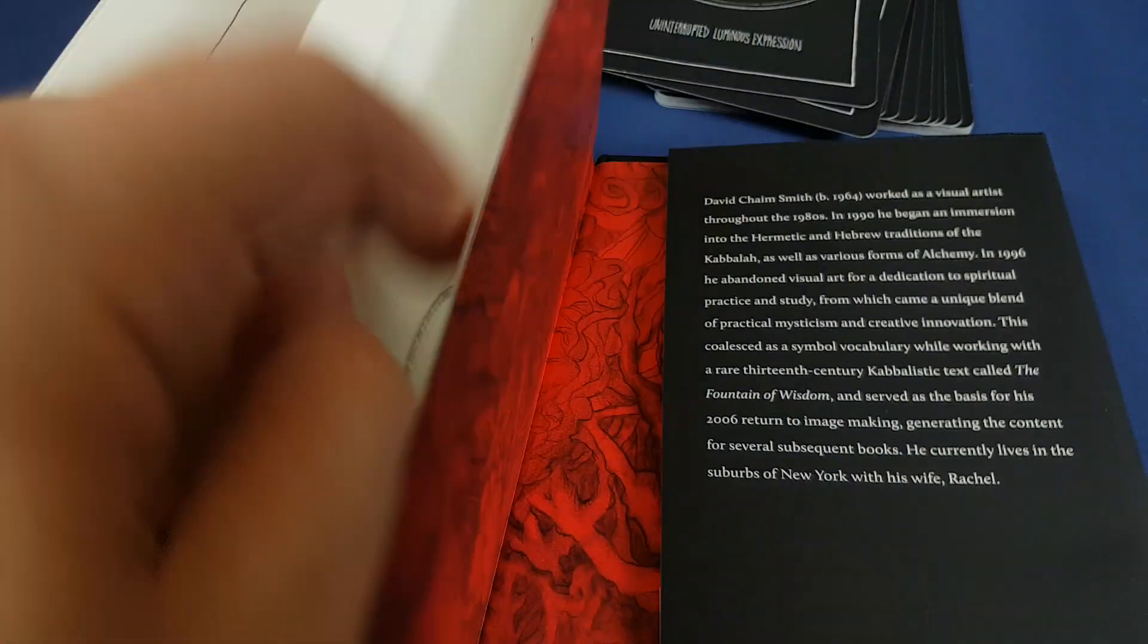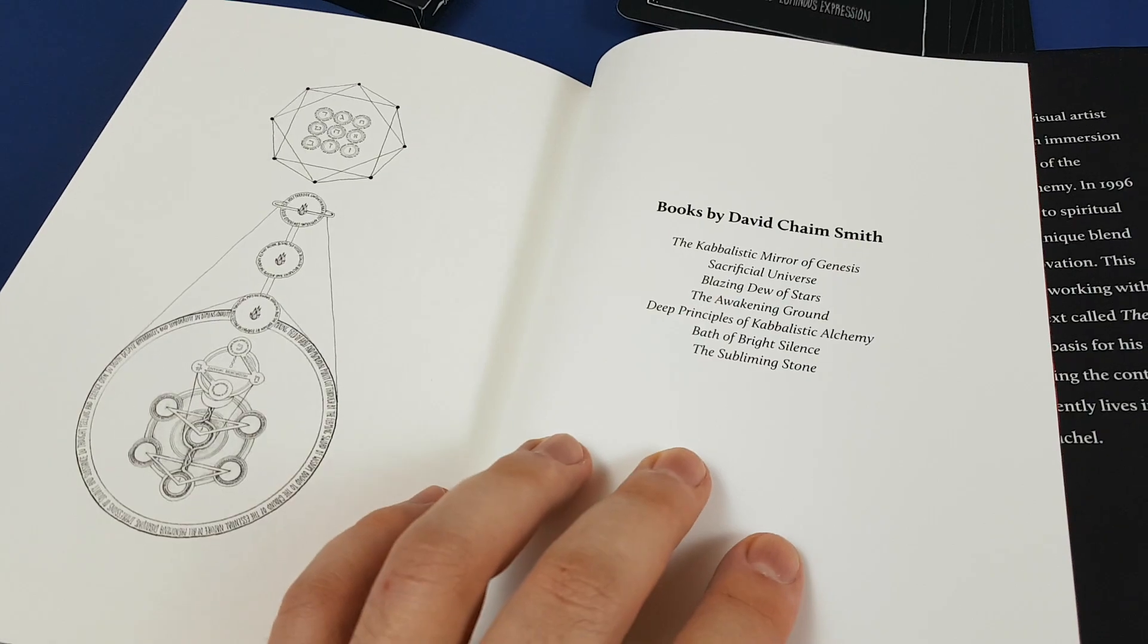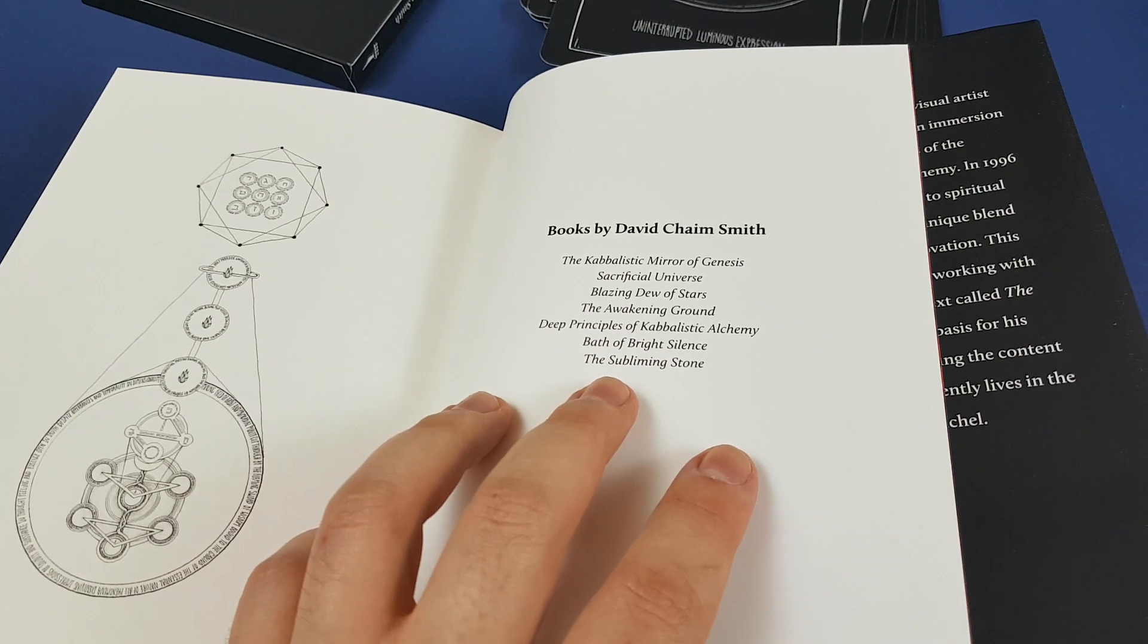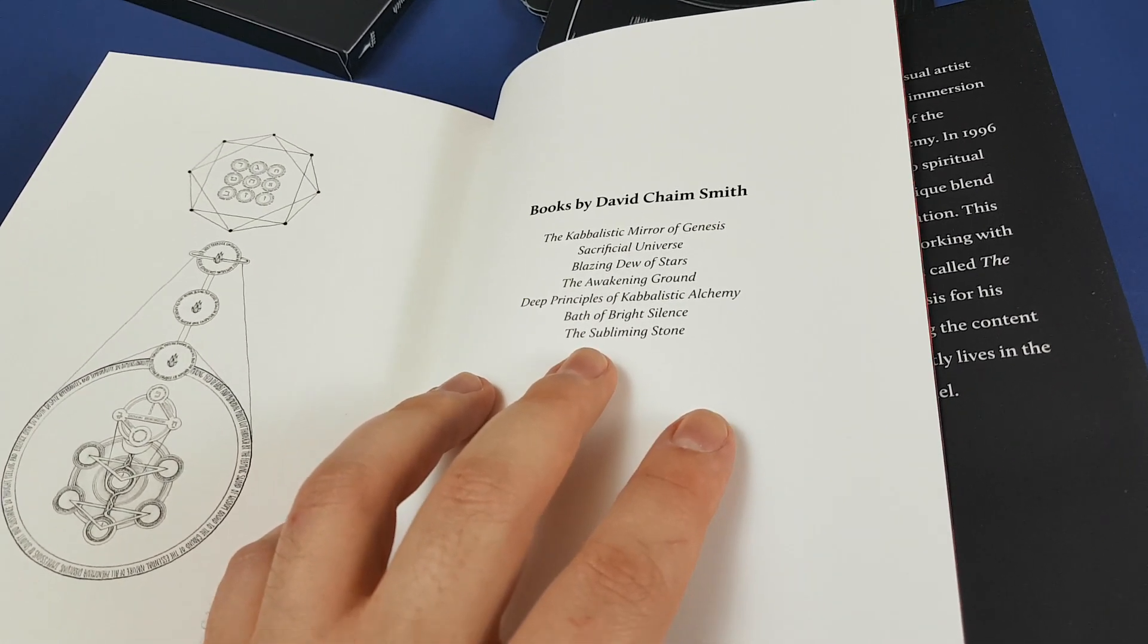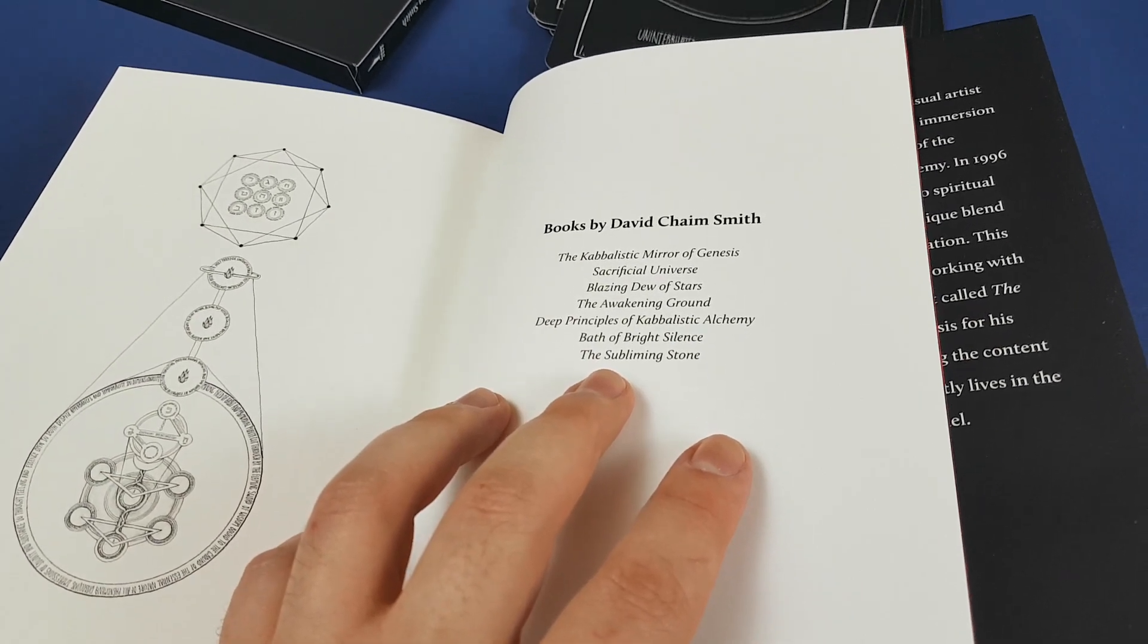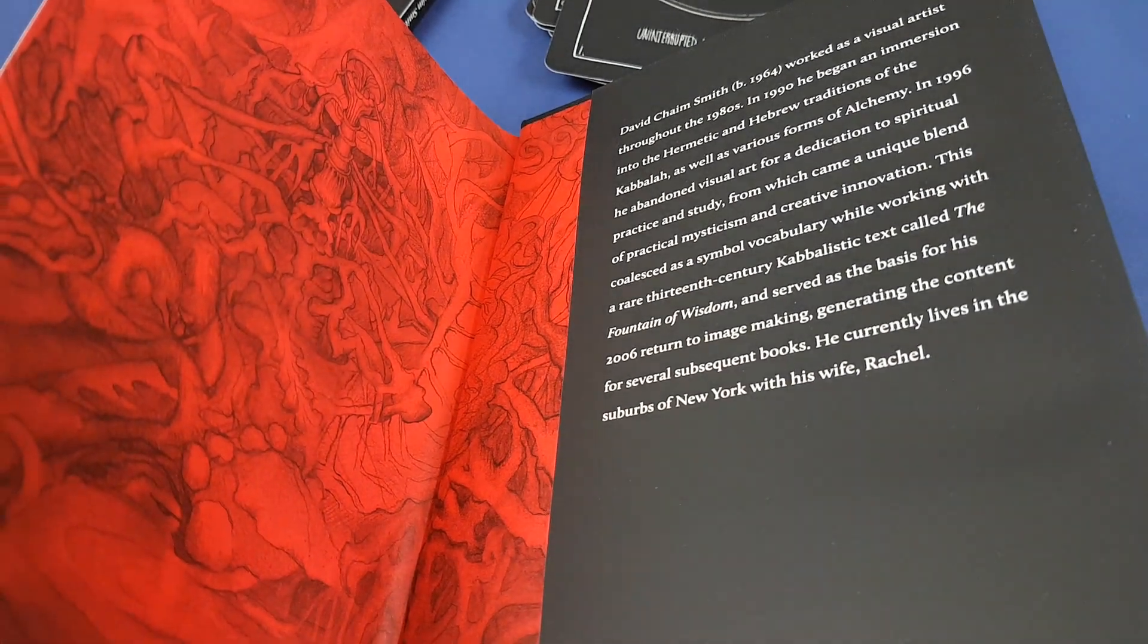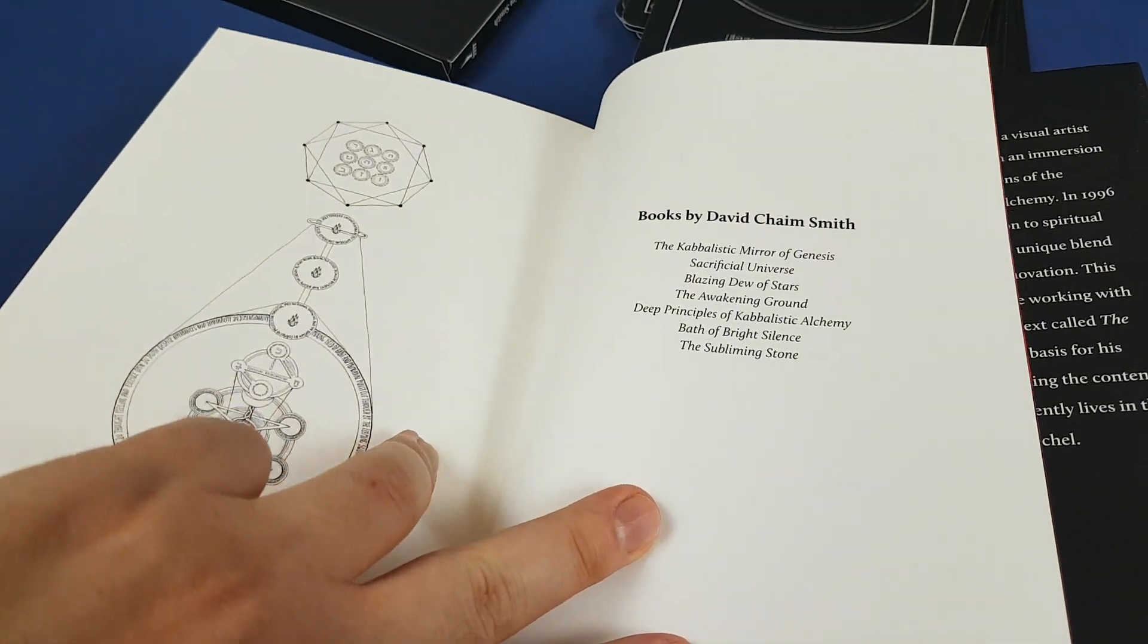And I strongly recommend it. I know that if you are in the United States, you can buy the set directly from David Heim Smith's website. You can also get it directly from Anathema Publishing. And if you're in Europe and don't fancy paying between $40 and $70 in shipping, then you can get it from Cyclic Law, who are also the distributor for Anathema Publishing.